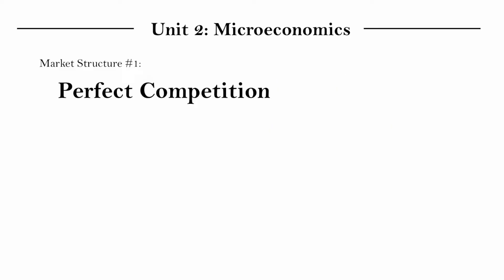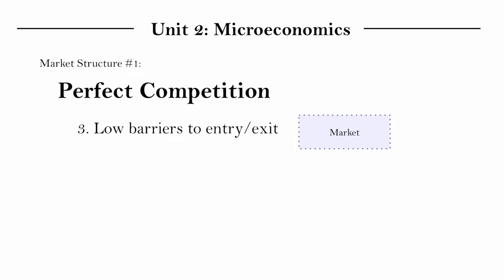The third condition is low barriers to entry and exit — meaning how easy is it for you to become a producer in this market, or to leave when you no longer want to be. Let me use two small examples to illustrate this idea.